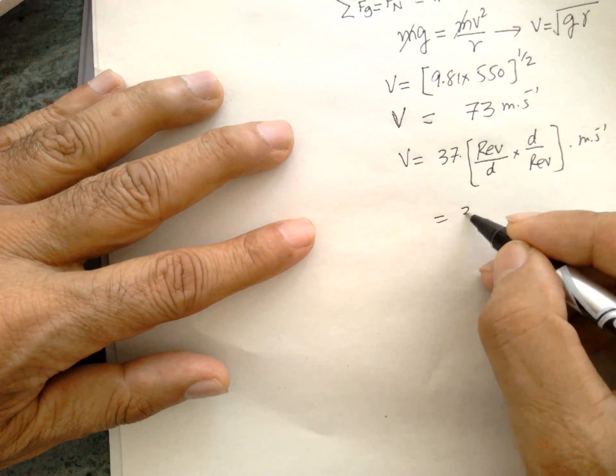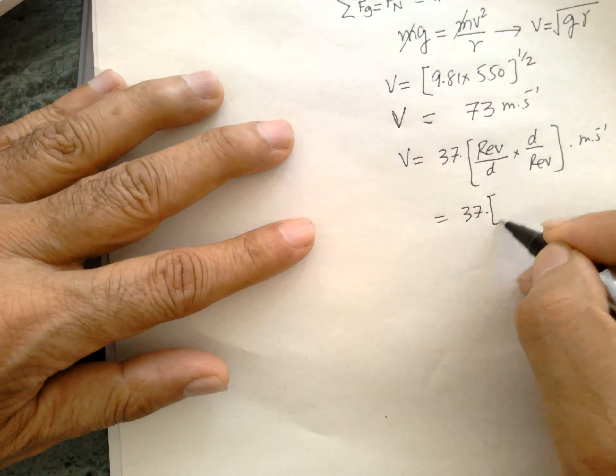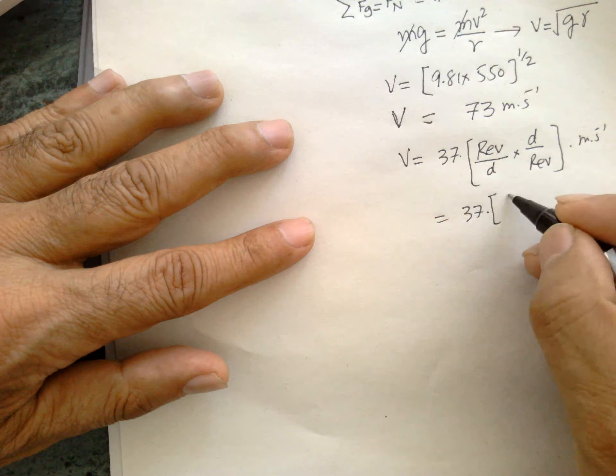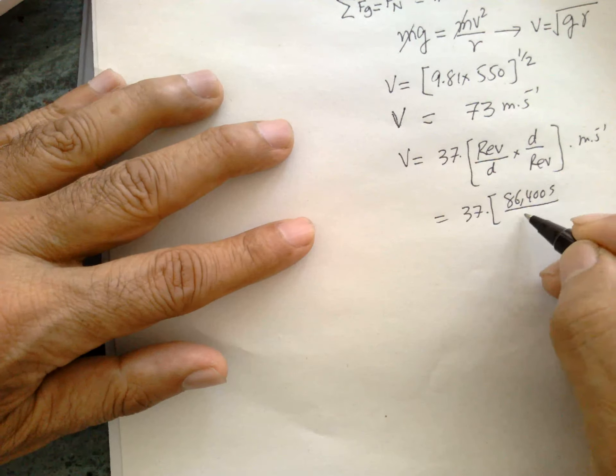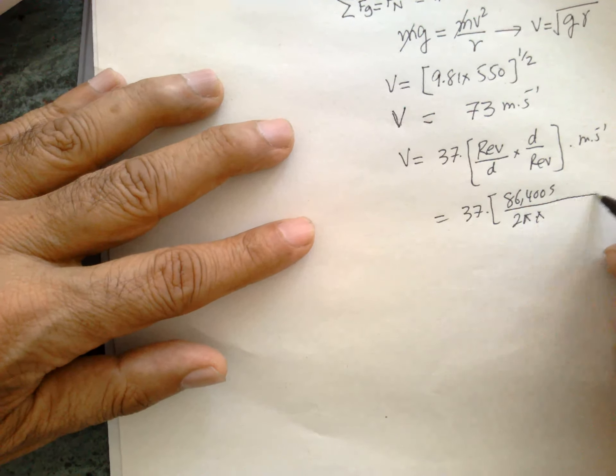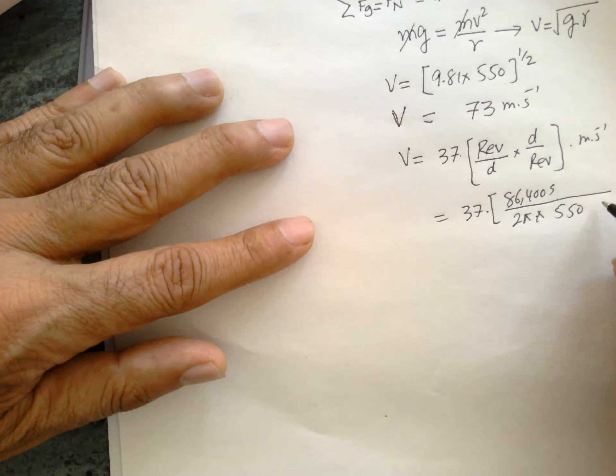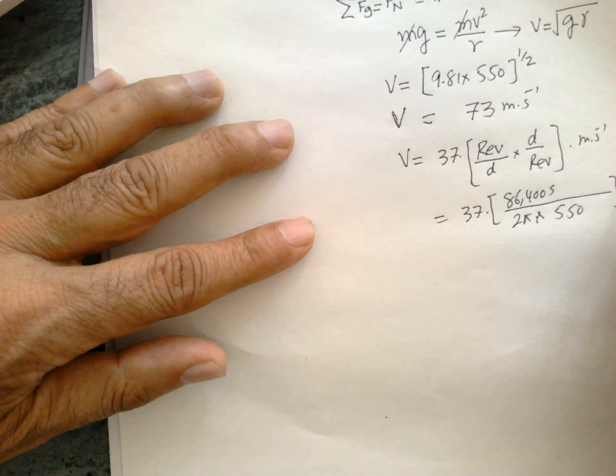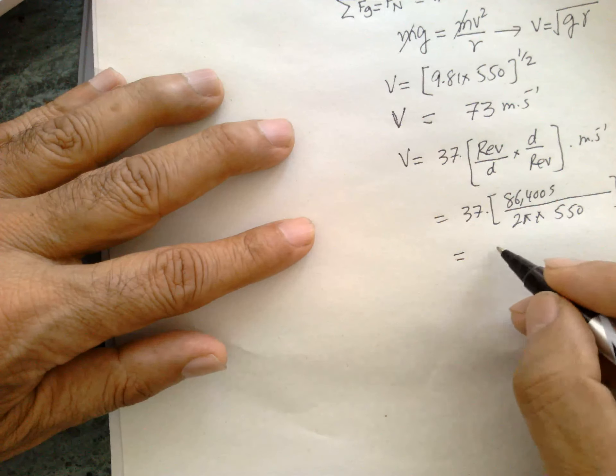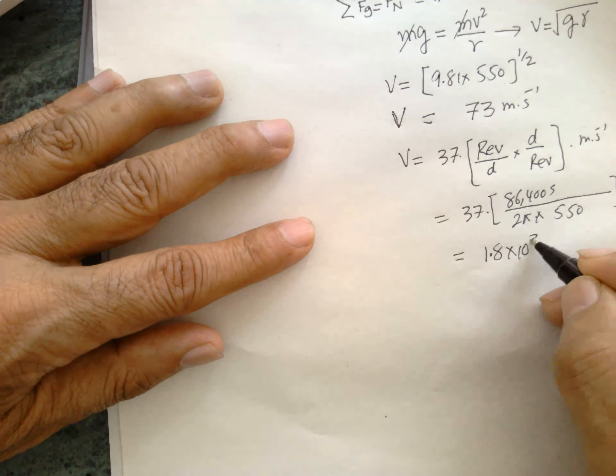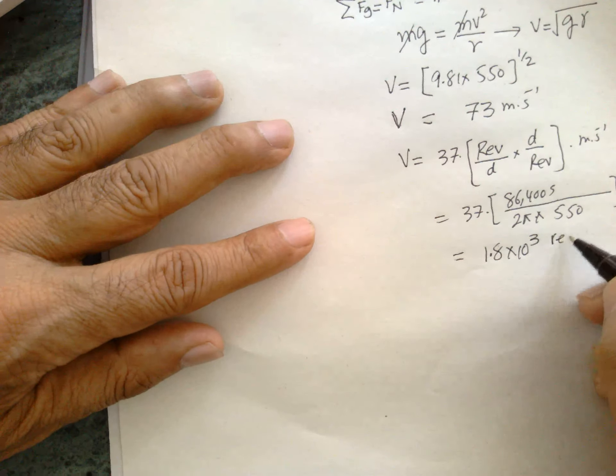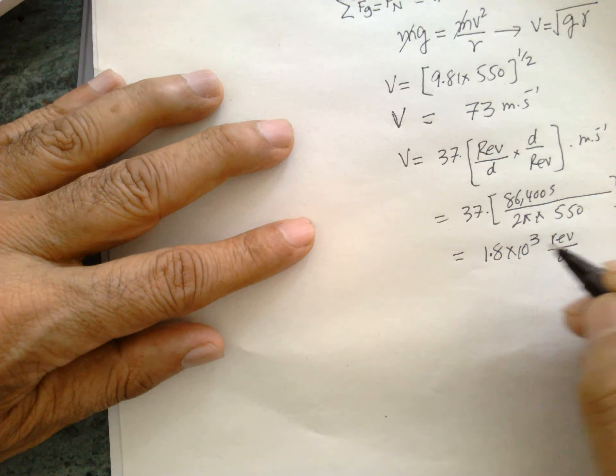So this is equal to 37. Day is 86,400 seconds and revolution is 2πR, so 2π multiplied by 550 meters. Then we can find out this one, which is equal to 1.8 × 10³ revolutions per day.